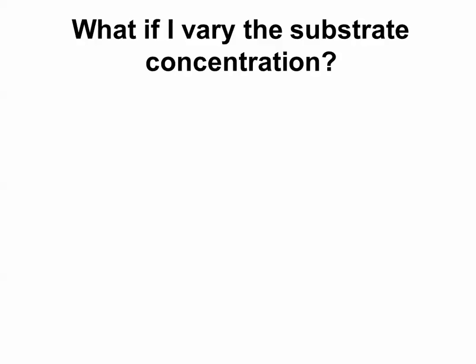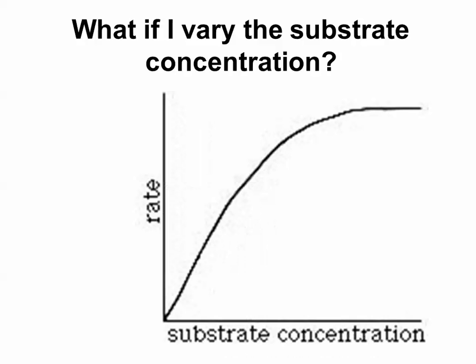So what if you vary the substrate concentration? Remember, in any kind of experimental design, you are trying to keep all factors the same, except for the one thing you're trying to study. That would be your independent variable. So assuming your enzyme concentration stays constant, you have a beaker with some particular concentration of enzymes in there. What if you start increasing the amount of substrate that's in there?